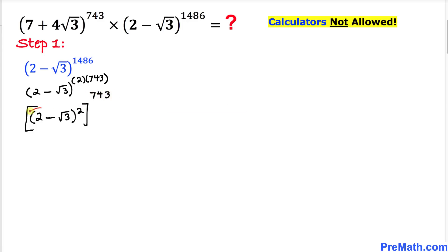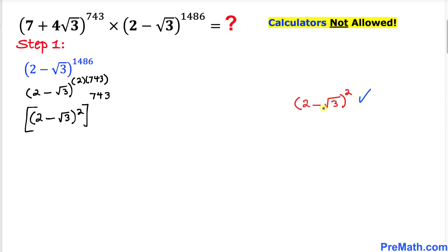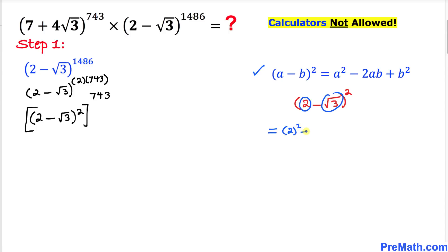Now let's focus on and simplify (2 - √3)². We recall the formula (a - b)² = a² - 2ab + b². Applying this, we get 2² - 2·2·√3 + (√3)², which simplifies to 4 - 4√3 + 3, since the square and square root undo each other.